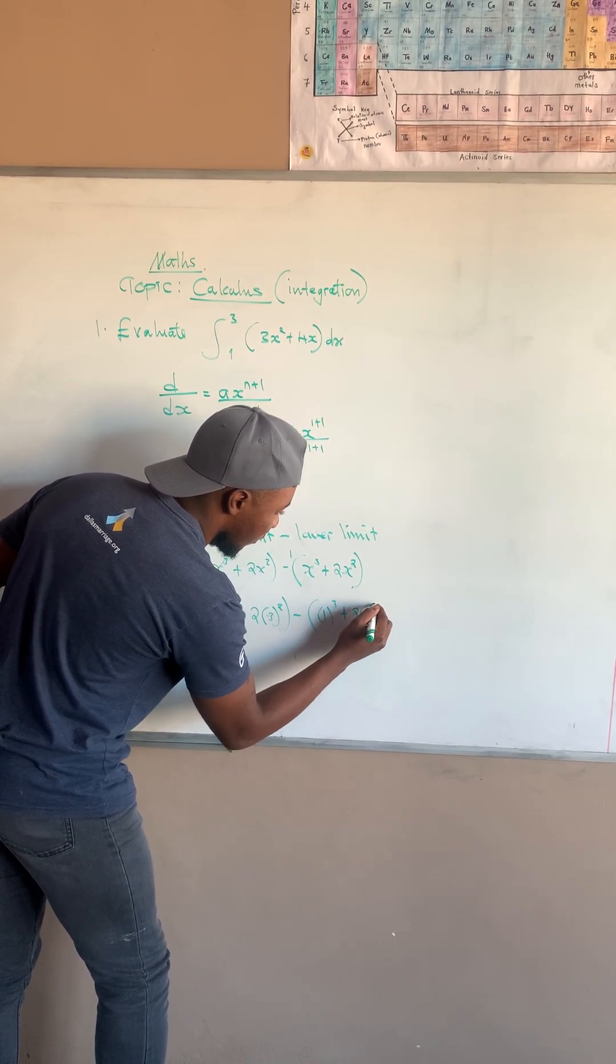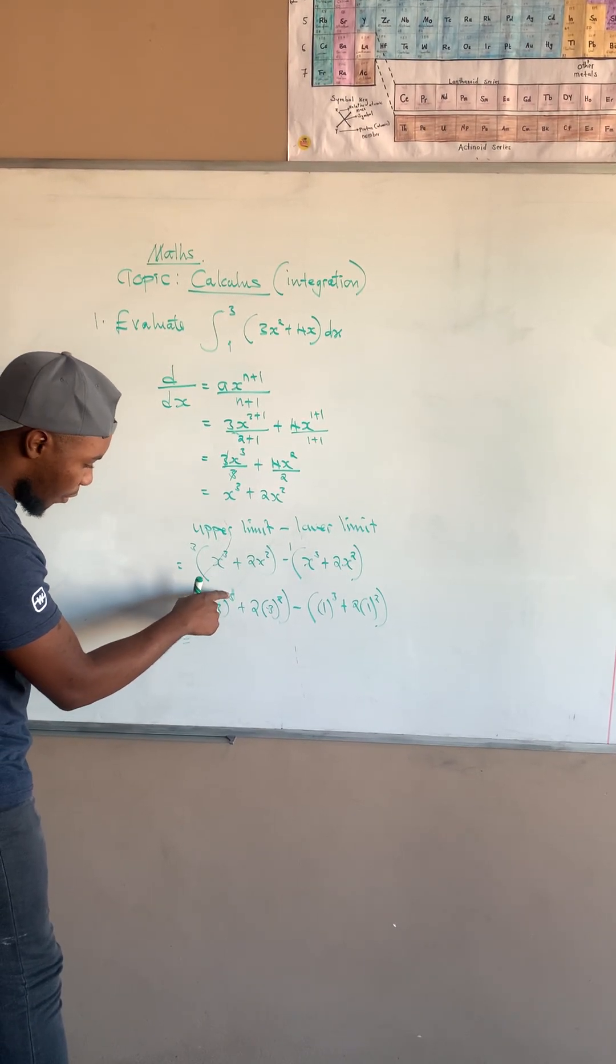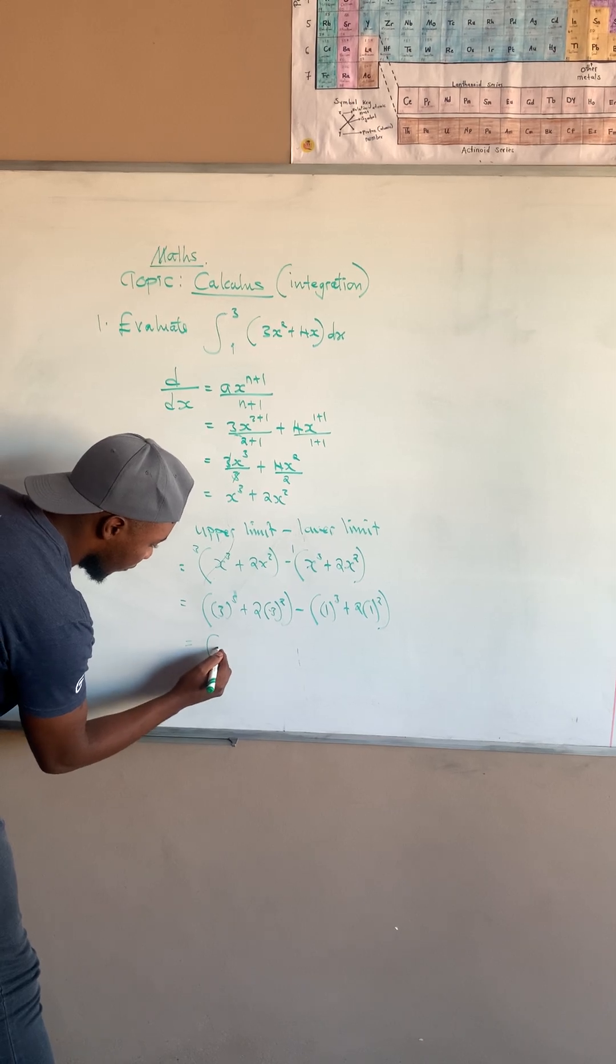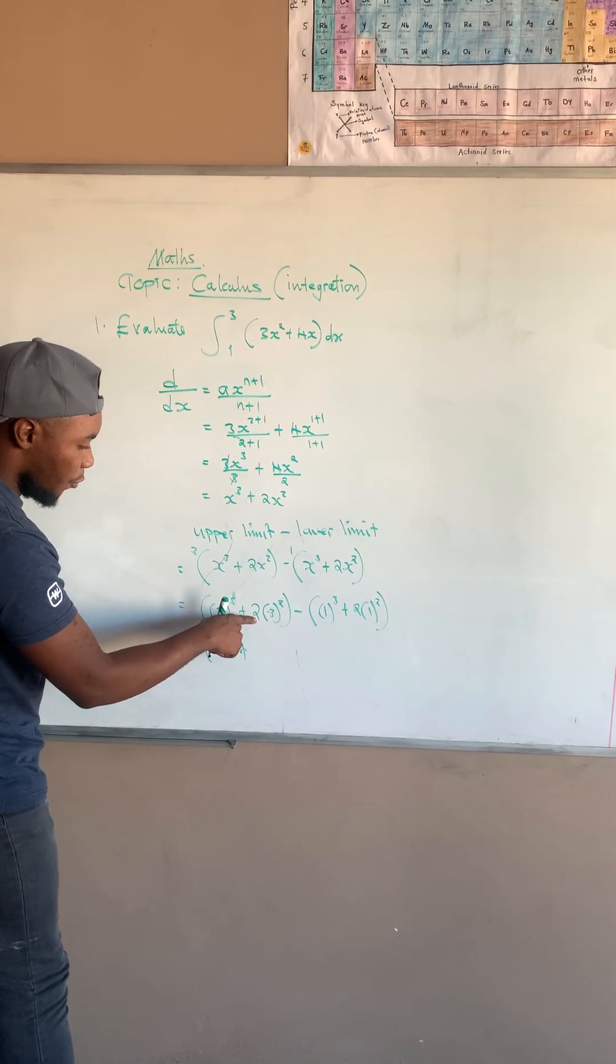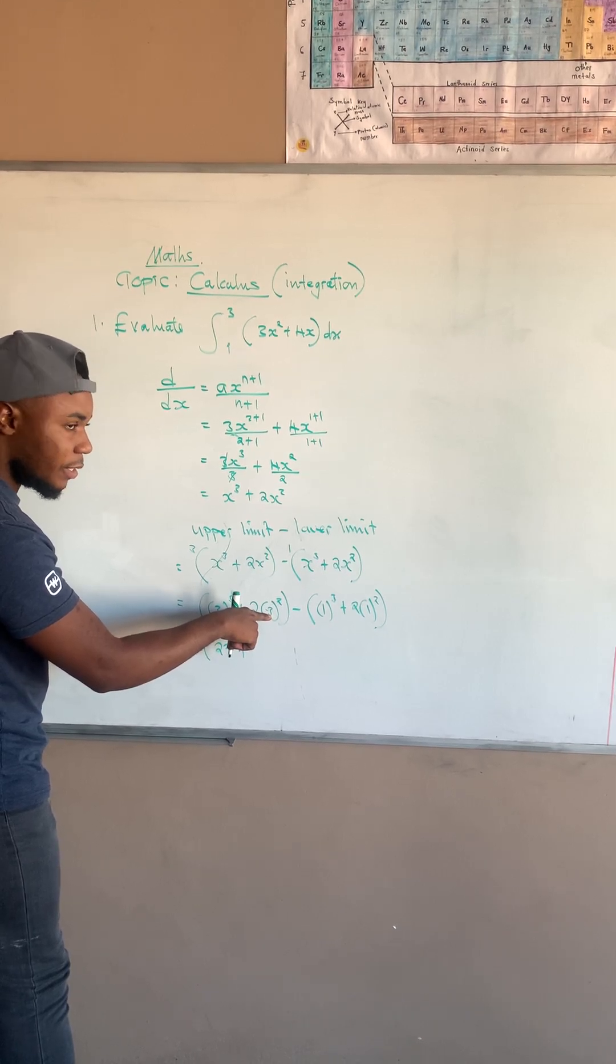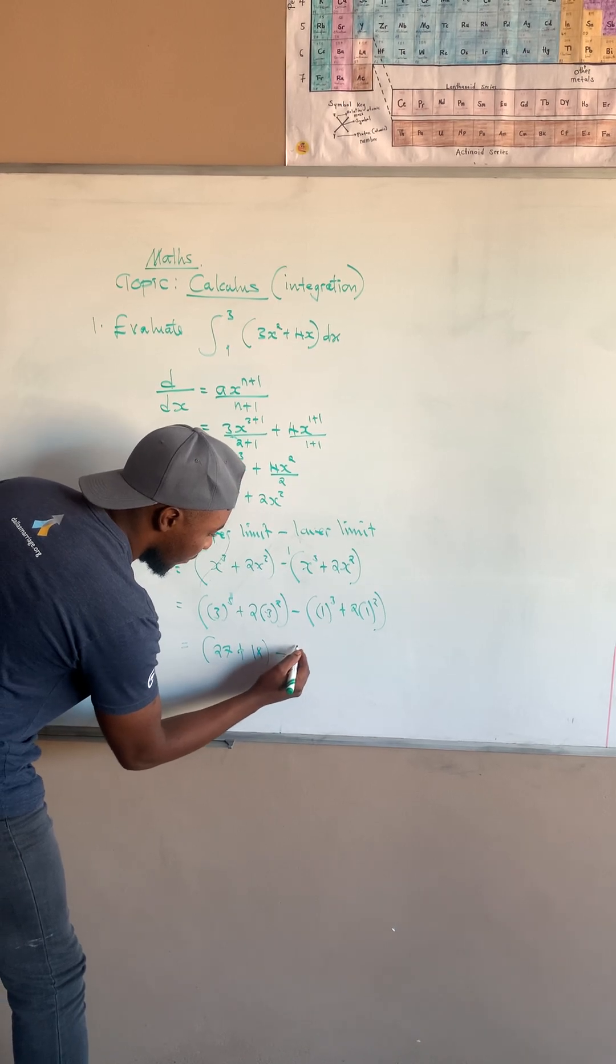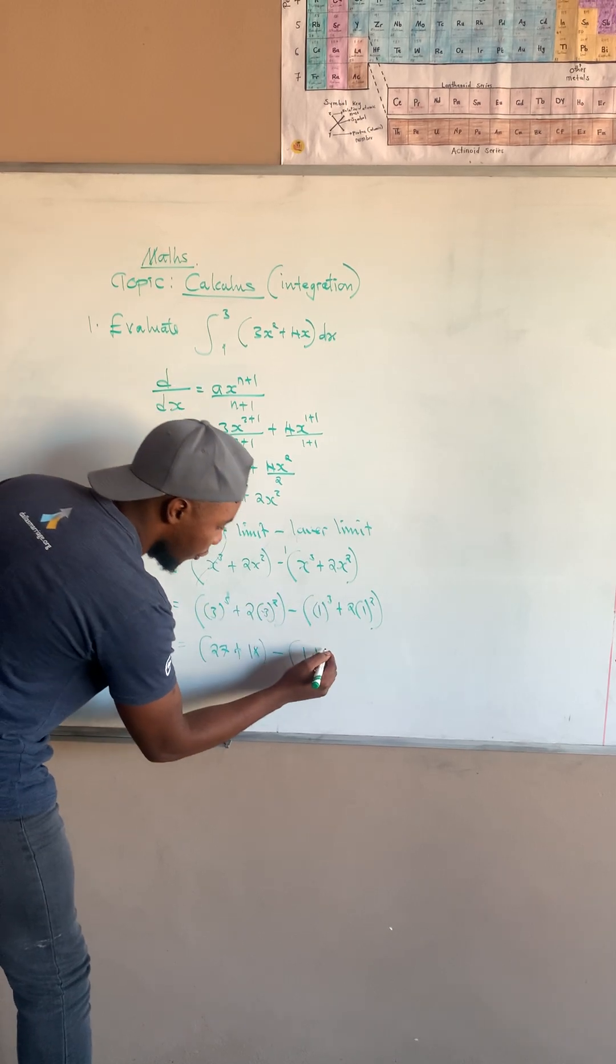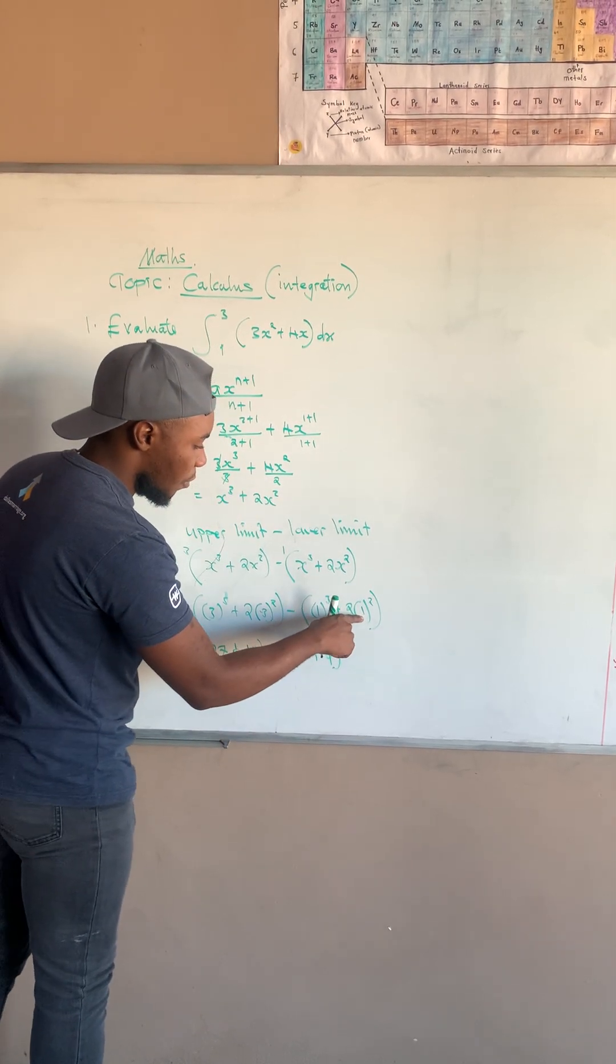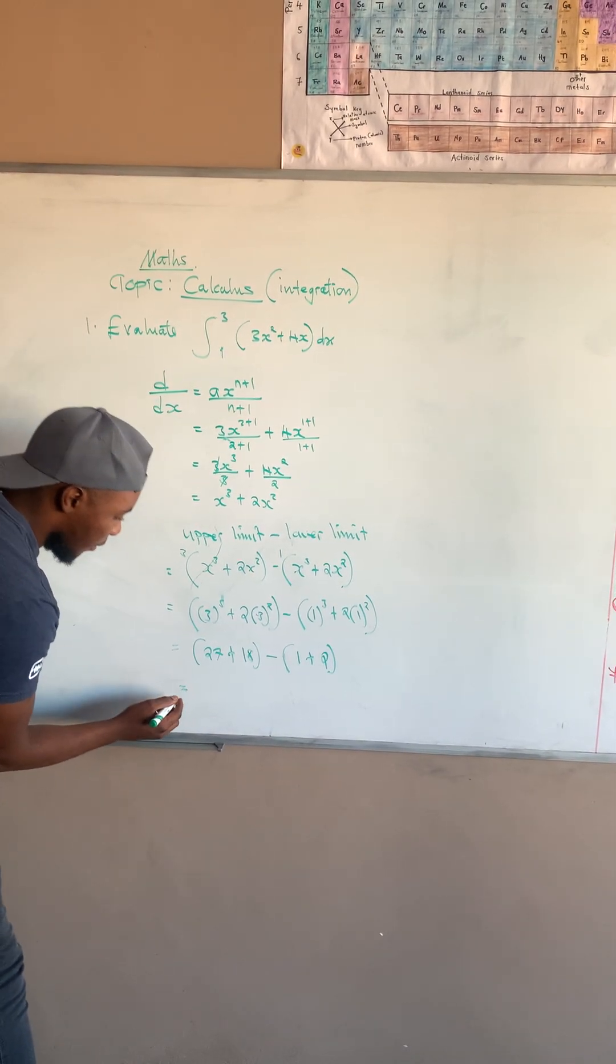Okay, so here's that 3 to the power of 3, that is 9. 9 times 2 is 18. Okay, I must open bracket here. Then plus here, 2, because 1 to the power of 3 is 1, 1 times 2 is 2.